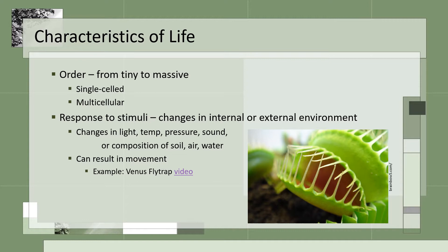Movement is also a stimulus that will result in a change to an organism. For example, if a fly lands on a Venus flytrap plant, the plant will respond to the fly's motion. This video shows how sensitive the plant is and how lucky a fly could be depending on how it moves about on the plant. If the video does not open, it is linked for you in Blackboard.